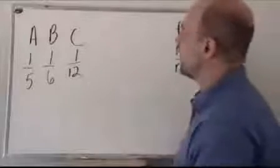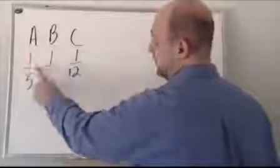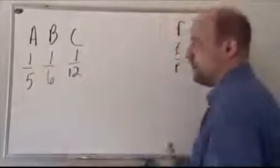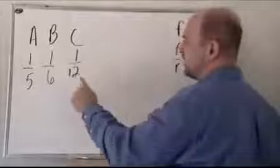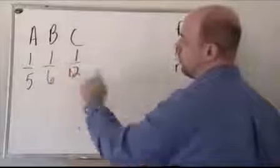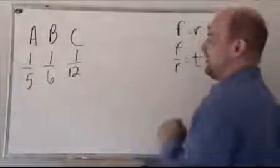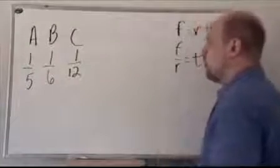Well, we have three pipes kind of working against each other. A fills this tank in five hours. Therefore, in every hour, A fills one-fifth of the tank. One-fifth times five will be one, 100% full. B fills the tank in six hours, so therefore, per hour fills one-sixth of the tank. And C empties the tank in 12 hours, therefore empties one-twelfth of the tank per hour.